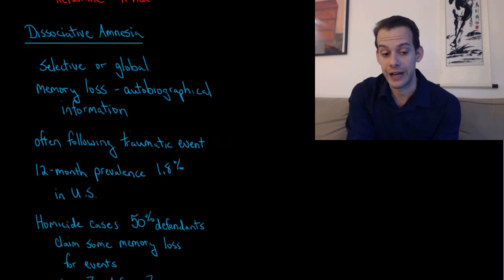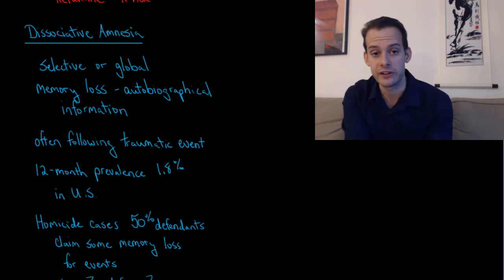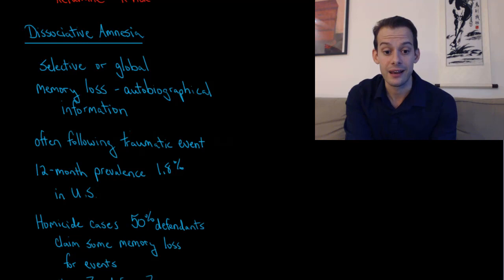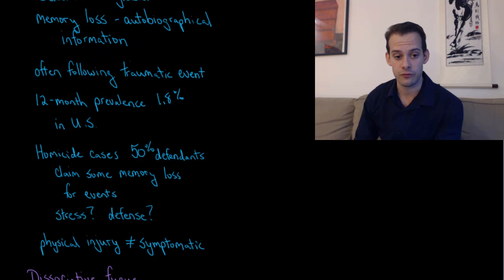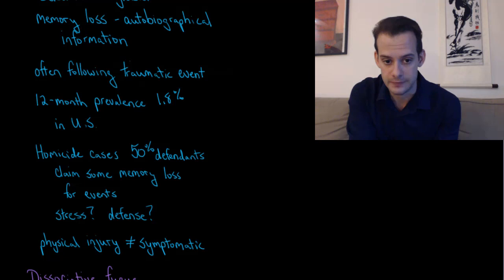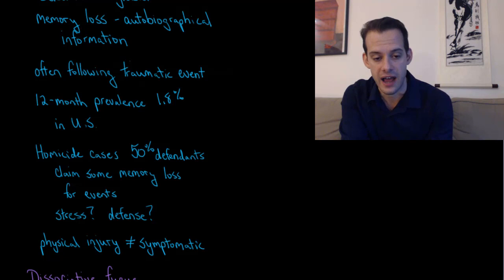This often occurs following traumatic events. The estimated 12-month prevalence for dissociative amnesia in the DSM-5 is 1.8% in the United States. But this can be difficult to assess because there are some situations where people may exaggerate their memory loss or claim to not have certain memories we would expect them to have. An example is if we look at homicide cases, we see about 50% of defendants will claim some memory loss for the events in question. You might wonder whether this is actual memory loss related to the stressfulness of certain events, or whether this is just a defense strategy to reduce their sense of culpability for a crime.